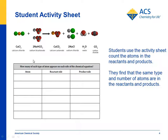On the student activity sheet, you can have students write down the different atoms — in this case, calcium, chlorine, sodium, hydrogen, carbon, and oxygen — and write down the number of atoms on the reactant side and the number on the product side, and they should be equal.